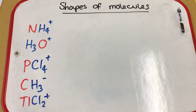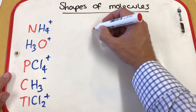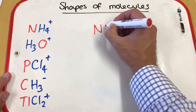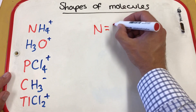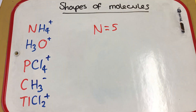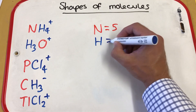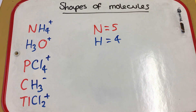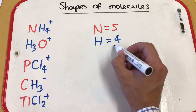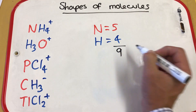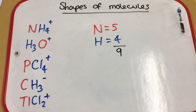Starting with the ammonium ion: we've got nitrogen in group five of the periodic table, so five bonding electrons. We have four hydrogens attached. Adding these together we end up getting nine electrons available for bonding.